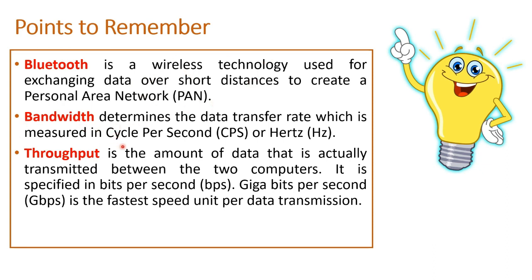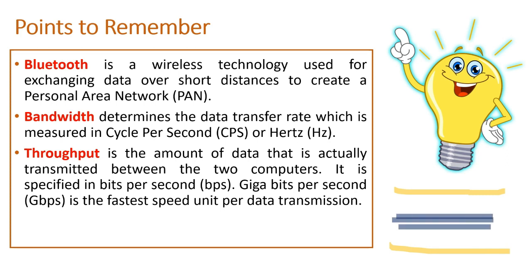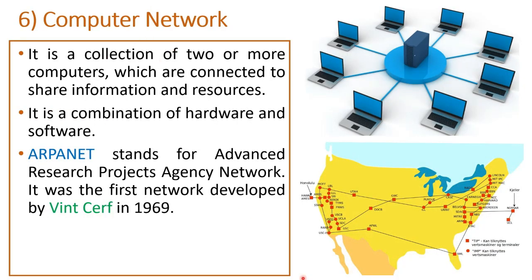Bandwidth determines the data transfer rate, which is measured in cycles per second (CPS), hertz, or Mbps. Throughput is the amount of data that is actually transmitted between two computers. For example, if a service provider offers a bandwidth of 600 Mbps for a location but you are only getting 10 Mbps, that 10 Mbps is called the throughput. The fastest speed unit for data transmission is GBPS — gigabytes per second. Now let us understand the next concept in this chapter: computer networks.